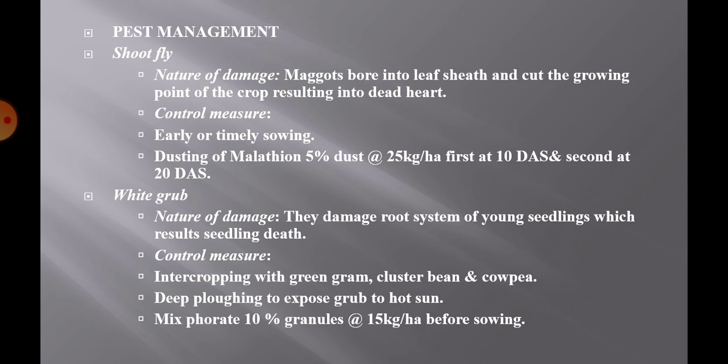White grub damages the root system of young seedlings, resulting in seedling death. To control white grub, intercrop with green gram, cluster bean and cowpea. Deep plowing is recommended to expose grubs to hot sun during the summer season. Also, mix phorate 10% granules at the rate of 15 kg per hectare before sowing.